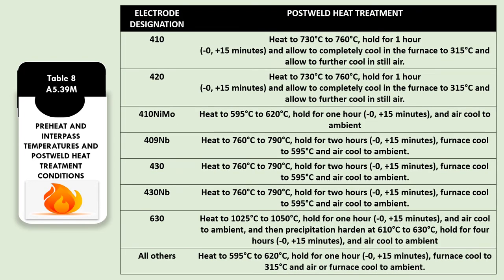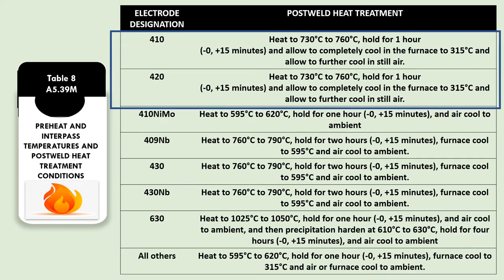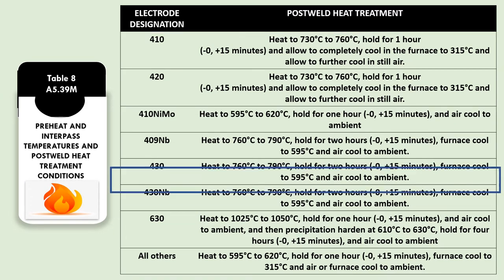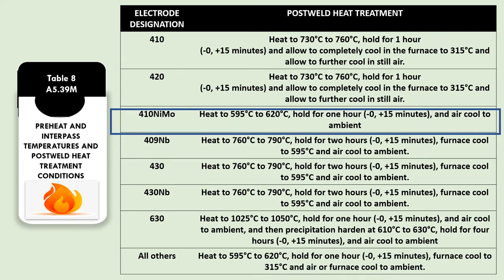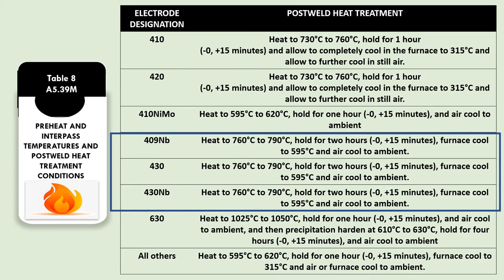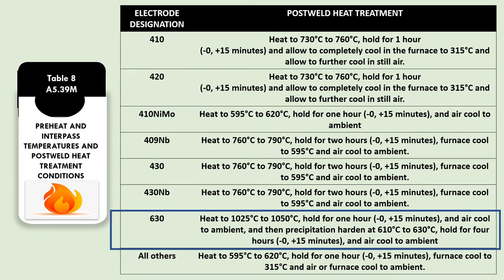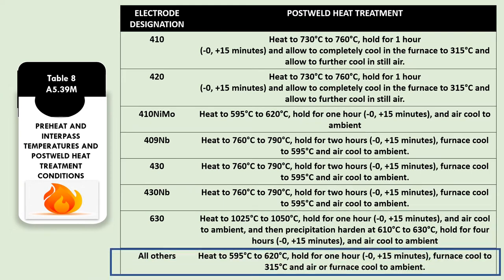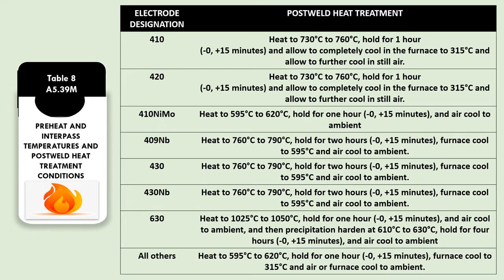Table 8 gives details about the preheat and inter-pass temperatures and post-weld heat treatment conditions, with specific PWHT temperatures for each designator. 410 and 420 indicate PWHT at 730 to 760°C. 410 NiMo at 595 to 620°C — PWHT is recommended. 490 NiMo at 760 to 790°C. 430 NiMo also at 760 to 790°C. 630 at 1025 to 1050°C. 460 NiMo at 730°C. For all others, PWHT at 595 to 620°C is recommended.